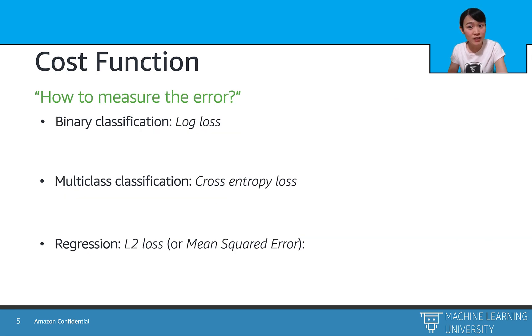After we output the result, how do we measure the error? We can use a variety of math functions to measure the discrepancy between the ground truth labels and our model predictions. For binary classification, we can use the math function called log loss, and for multi-class classification, we can use the cross entropy loss. Last but not least, for the regression problem, we can use the L2 loss, which is also called the mean square error.